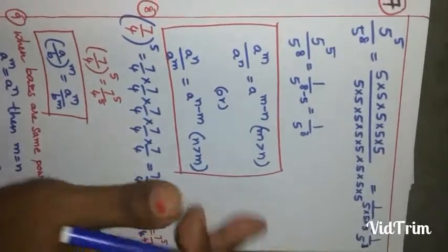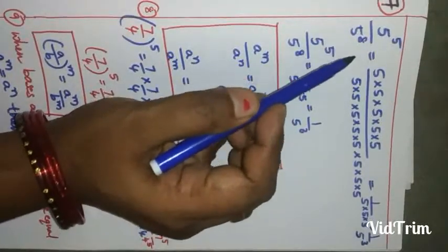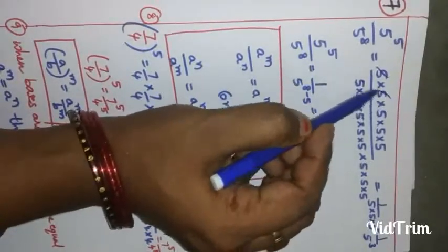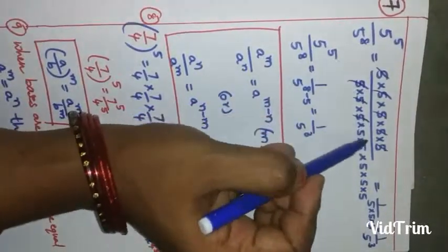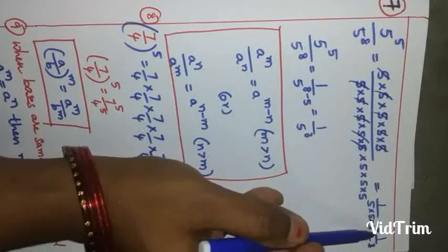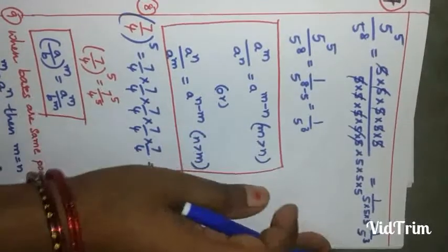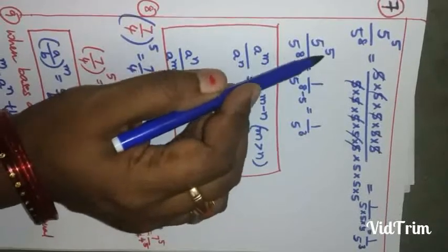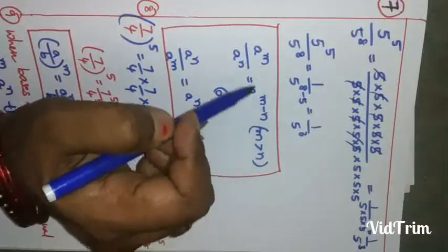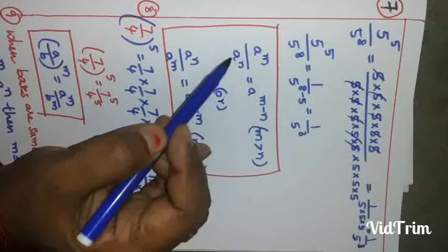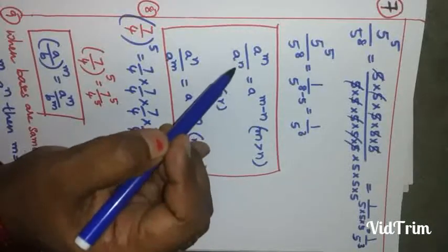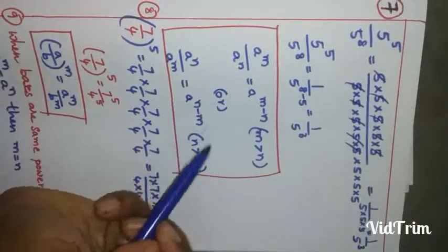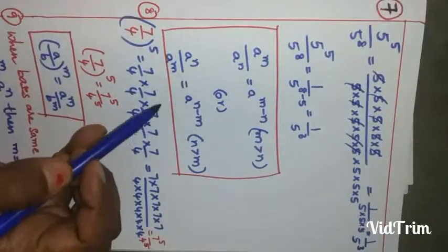Now the seventh formula: 5^5 divided by 5^8. Writing it out: 5 multiplied 5 times in the numerator and 5 multiplied 8 times in the denominator — five 5's cancel, leaving 3 fives in the denominator, so the result is 1/5^3. Therefore 5^5 ÷ 5^8 = 1/5^3. How? Subtracting: 8 minus 5 = 3. So a^m ÷ a^n, when bases are the same, we subtract the powers. When n is greater than m, we subtract greatest minus smallest and the result goes in the denominator.